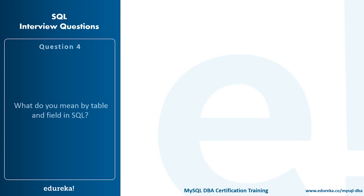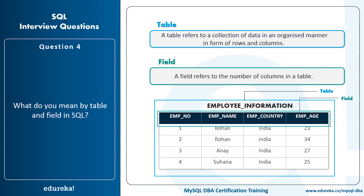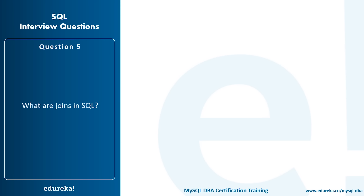What do you mean by a table and a field in SQL? A table refers to a collection of data organized in rows and columns, and a field refers to the number of columns in the table. In SQL, a database consists of many tables, and the column names in those tables are the fields. For example, an employee information table is the table, and the column names within it are the fields. The next question is: what are JOINs in SQL? A JOIN clause is used to combine rows from two or more tables based on related columns between them, and there are mainly four types: INNER JOIN, FULL JOIN, LEFT JOIN, and RIGHT JOIN.